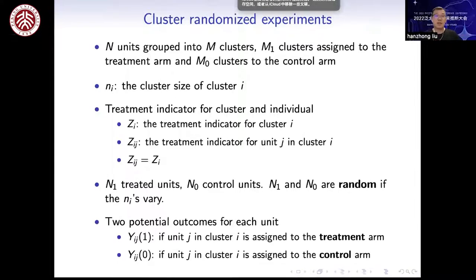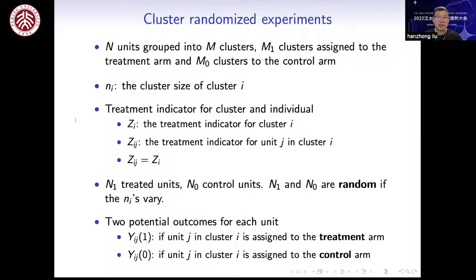Consider a cluster randomized experiment with a finite population of N units grouped into M clusters. The experimenter randomly assigns M1 clusters to the treatment arm and the remaining M0 clusters to the control arm. Let NI denote the size of cluster I and ZI denote the treatment indicator: ZI equals 1 if cluster I is assigned to treatment and ZI equals 0 if assigned to control. I will denote the total number of treated and control units by N1 and N0. Different from completely randomized experiments, N1 and N0 are random if the NI vary.